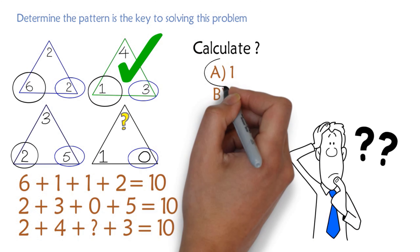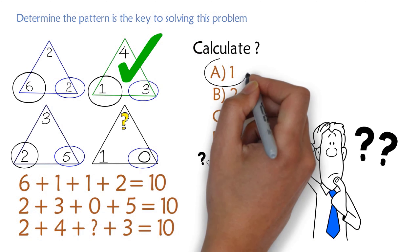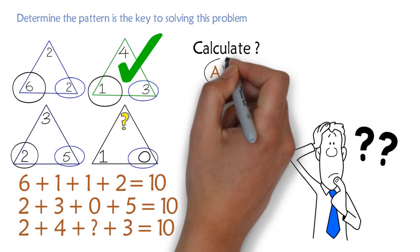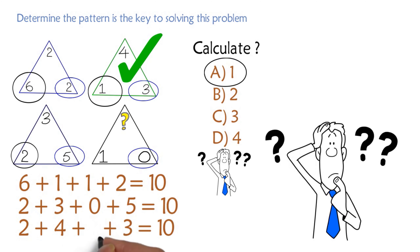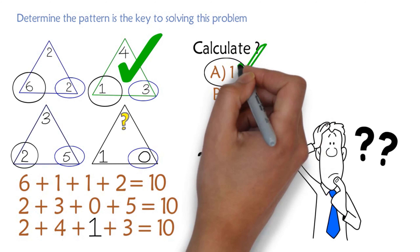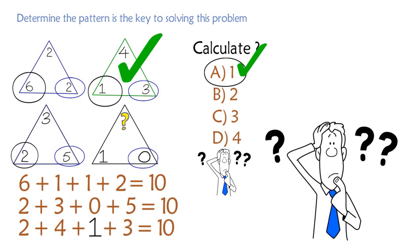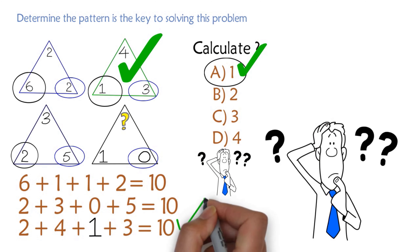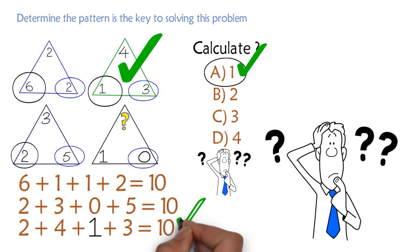The correct answer to this problem is choice A, one, because this is the number needed to make the upper corners also sum to ten. Hopefully you've nailed this question and now know how to answer similar problems on the test.